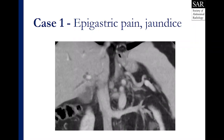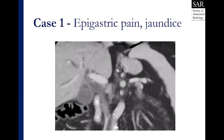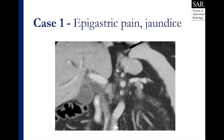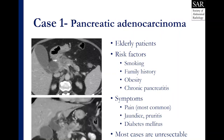Here is case one. It's a patient with epigastric pain and jaundice, and here we have a video clip of a coronal post-contrast CT. Many of you have seen something like this before. You know this as a classic example of pancreatic ductal adenocarcinoma, or PDAC.